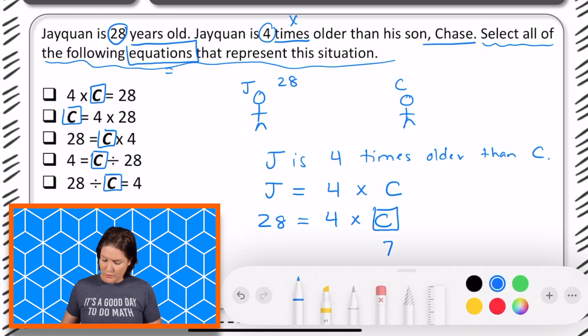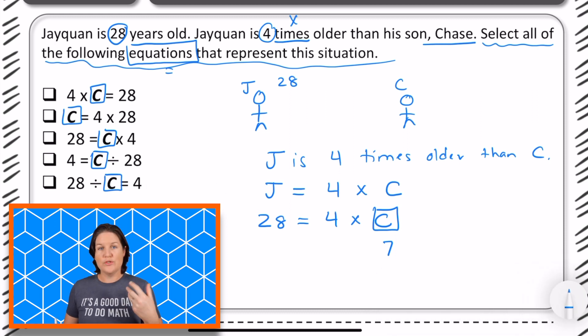Okay, so in the first one, we have 4 times C equals 28. If we plug in 7 there, would it make sense? 4 times how old Chase is, is 28? 4 times 7. Is that 28? Yes. So should we keep this one or eliminate it? Let's keep it.